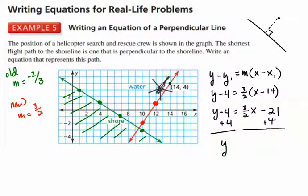we'll end up with y is equal to 3 over 2x minus 17. Now, we can't tell exactly where this red line is going to intersect the y-axis, but minus 17 looks reasonable there. So that is the equation that represents that path.